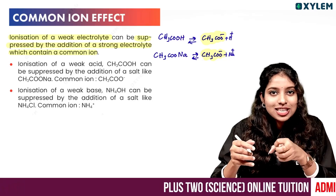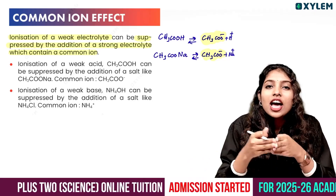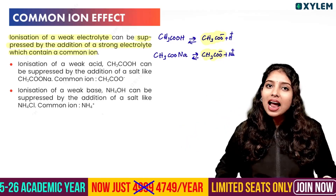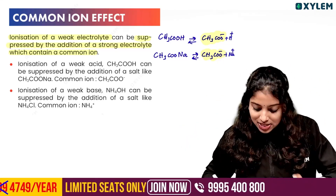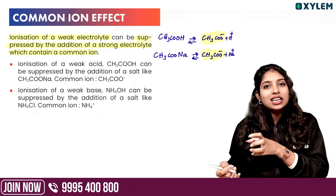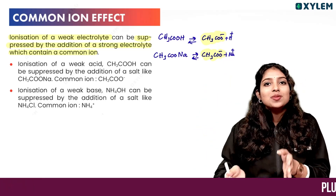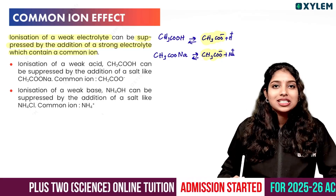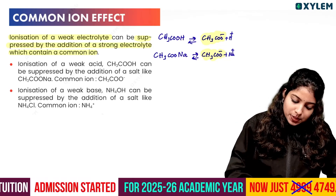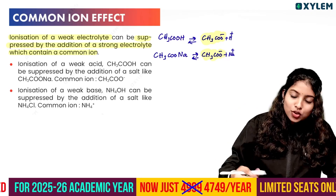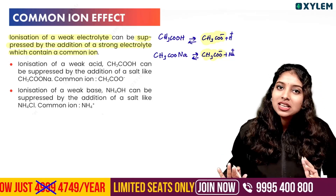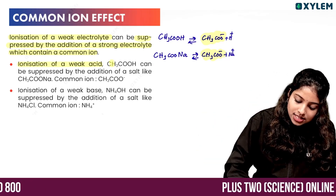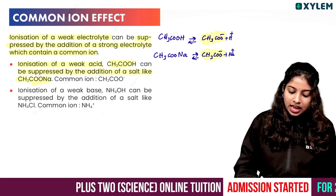A weak electrolyte like CH3COOH demonstrates the Common Ion Effect. The dissociation of a weak electrolyte can be suppressed by the addition of a salt like CH3COONa — that is, the common ion is CH3COO⁻.